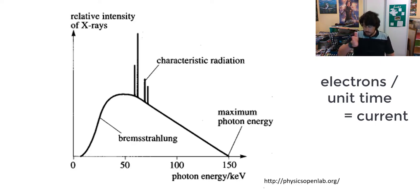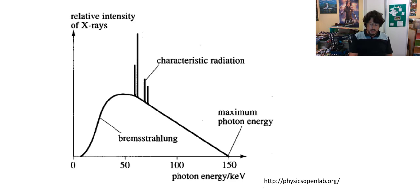So rather than just increasing the voltage across the x-ray tube, we're going to change the current. So we're going to change the amount of electrons crossing the tube.